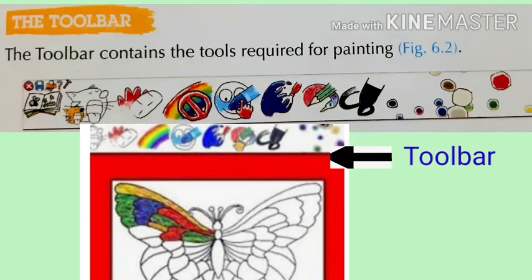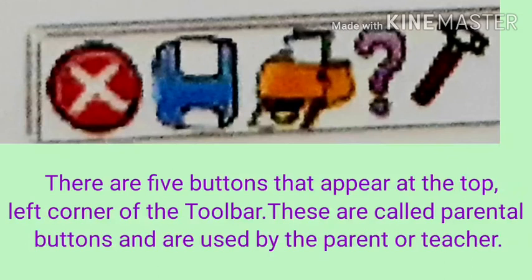The Toolbar contains the tools required for painting, as you can see in this picture. There are five buttons that appear at the top left corner of the toolbar. These are called parental buttons and are used by a parent or teacher.